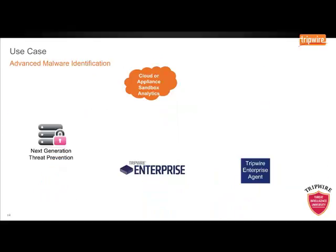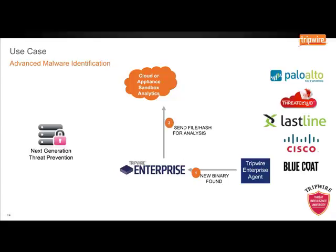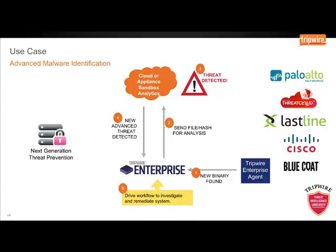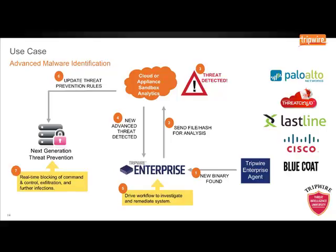Advanced malware identification: identify advanced threats on high-risk assets through integration to malware analytic services and appliances using sandbox technology. The Tripwire Enterprise agent on the endpoint detects a new binary introduced to the system. Tripwire Enterprise will then validate the hash and send the file or hash to a cloud threat intelligence provider such as Palo Alto Networks, ThreatCloud, Lastline, Cisco ThreatGrid, or Bluecoat. The provider will analyse the file or hash in their appliance or sandbox environment and, if a new threat is detected, return valuable metadata back to Tripwire Enterprise. Once the intelligence is received, Tripwire Enterprise can then drive a workflow — for example, to update threat prevention rules or aid other technologies to conduct real-time blocking of these infections on the endpoint.